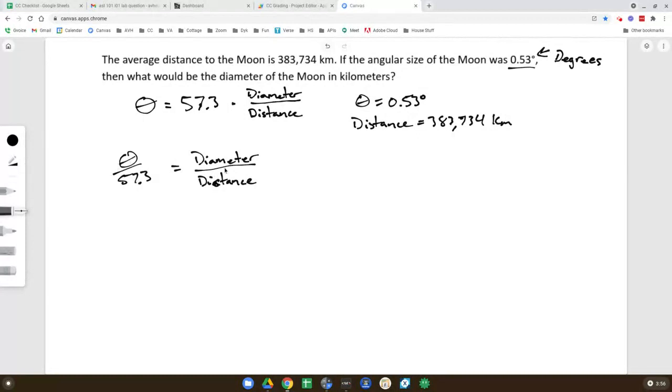Theta over 57.3. Now I want to solve for diameter. So I multiply both sides by distance and I end up with theta over 57.3 times distance equals diameter.